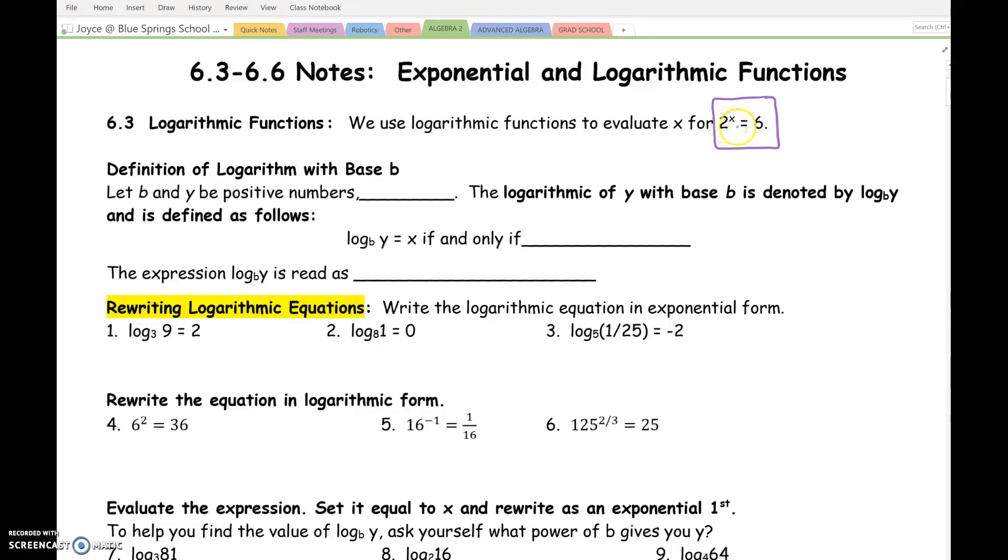So right now, all we could do is say, well, 2 squared is 4 and 2 to the 3rd is 8. So it must be like, maybe 2.5. And then we'd try 2.5 and see if it works. The only thing we could do is guess and check.